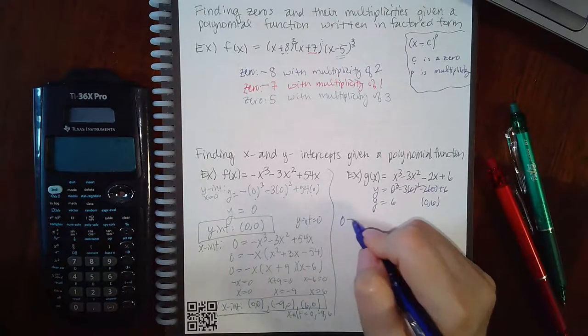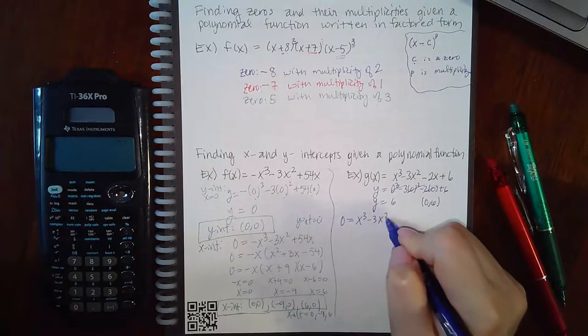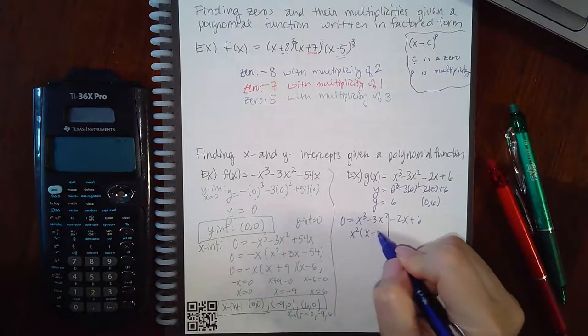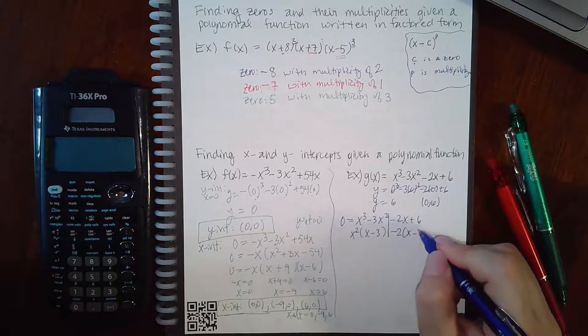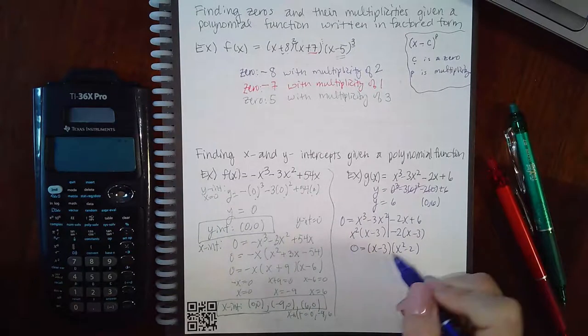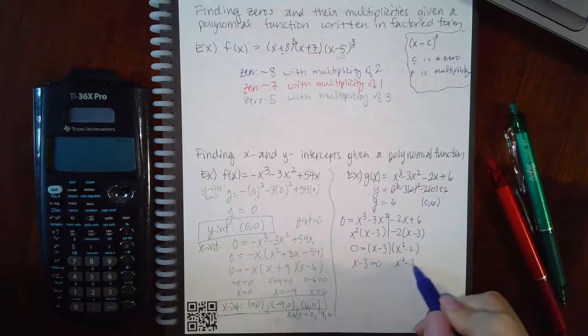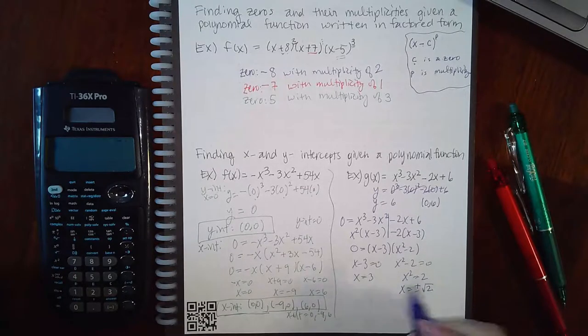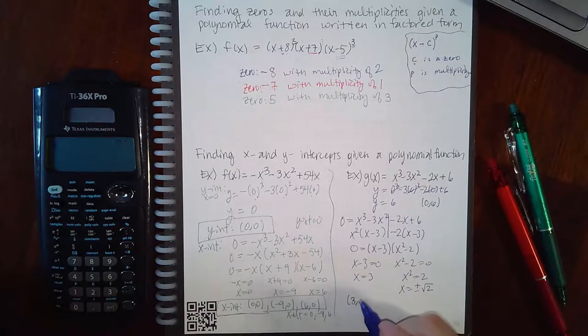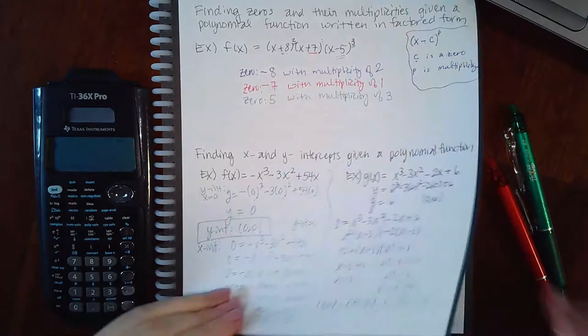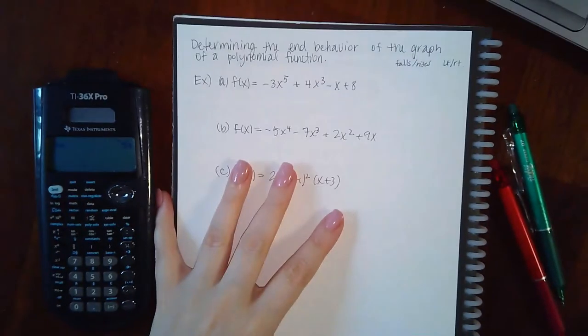Then for the x intercepts, we're going to plug in 0 for the y value and try to calculate this x value. Since we have four terms here, we're going to do factor by grouping. So we get x minus 3, factor out a negative 2, you get x minus 3. X minus 3 times x squared minus 2. And so if we set each factor equal to 0, we get x equals 3, and then x equals plus or minus square root of 2. So we have three x intercepts here. 3 comma 0, square root of 2 comma 0, and negative square root of 2 comma 0.